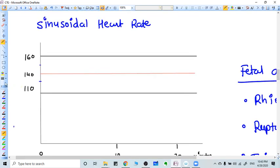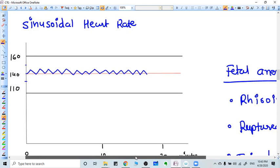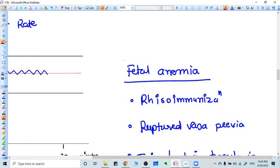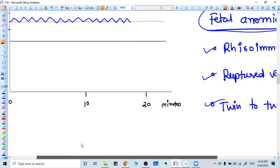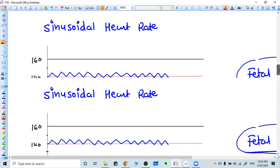Another pattern of abnormal pattern of heart rate is sinusoidal heart rate. This kind of graph makes a sinusoidal heart rate. What are the reasons of sinusoidal heart rate? The main reason is fetal anemia. It may be due to RH isoimmunization or it may be due to rupture vasa previa. Fetal anemia will cause sinusoidal pattern, twin-to-twin transfusion. So you got what is sinusoidal heart rate.